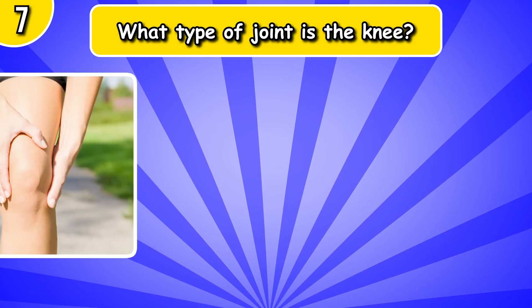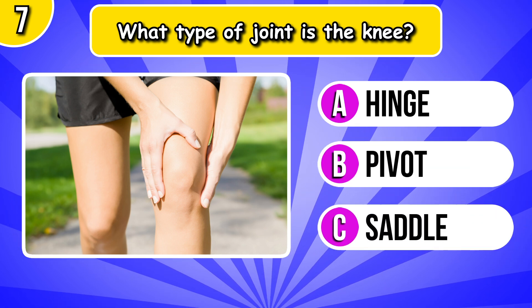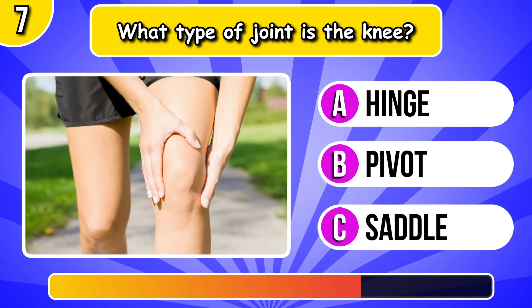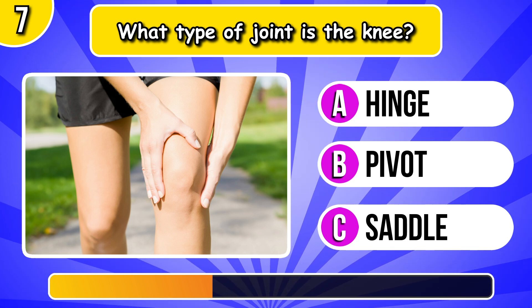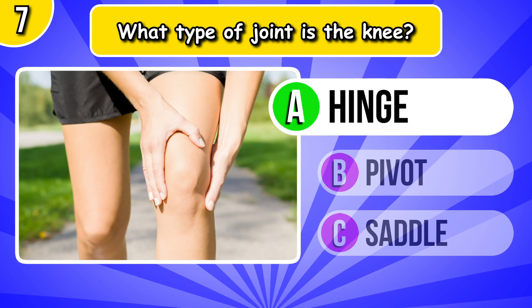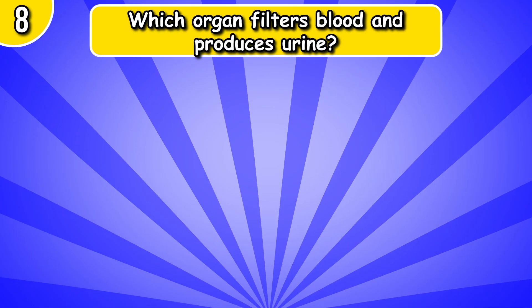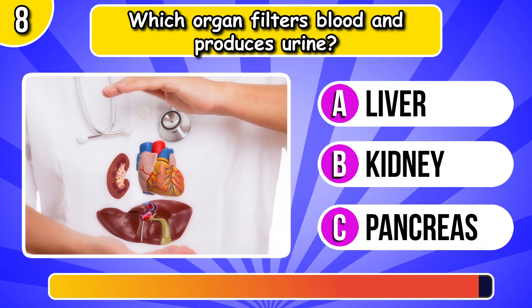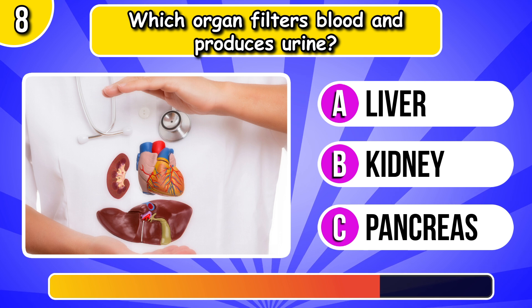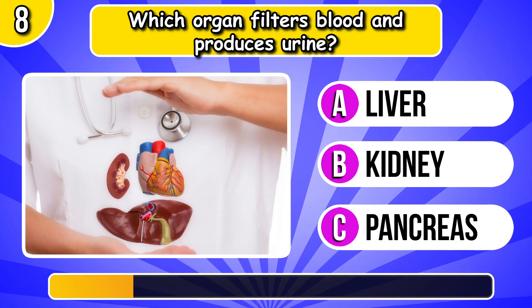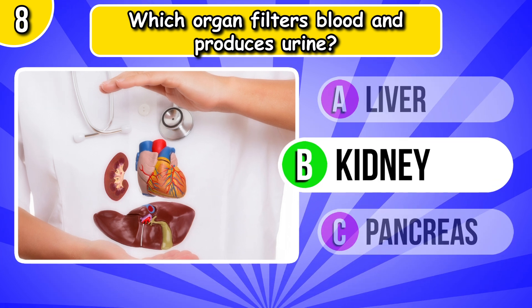What type of joint is the knee? Which organ filters blood and produces urine? It's kidney.